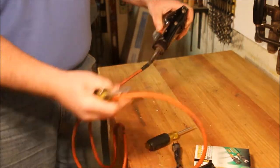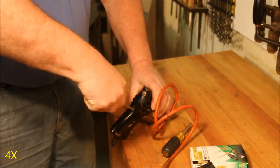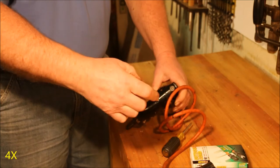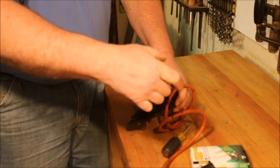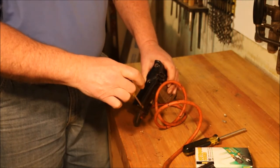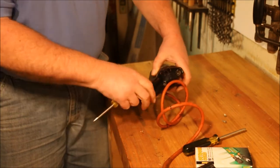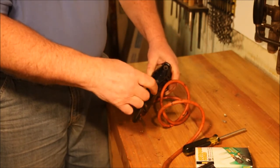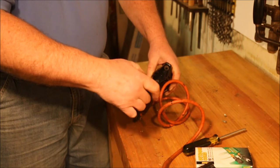With the drill motor unplugged, I'm going to loosen these screws that hold the back of the case on. I'm going to loosen these two screws here that hold the back of the handle together. And that will allow me to separate the cable clamp.